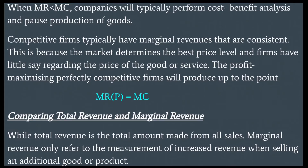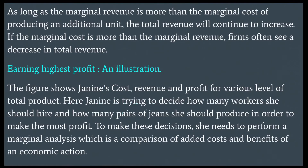Comparing total revenue and marginal revenue: while total revenue is the total amount made from all sales, marginal revenue only refers to the measurement of increased revenue when selling an additional good or product. As long as the marginal revenue is more than the marginal cost of producing an additional unit, total revenue will continue to increase. If the marginal cost is more than the marginal revenue, the firm will often see a decrease in total revenue.